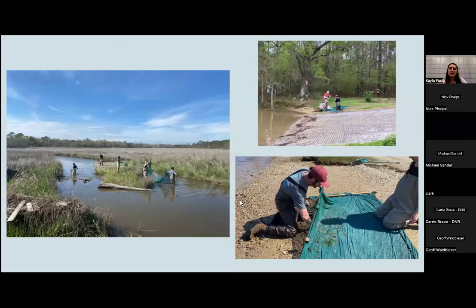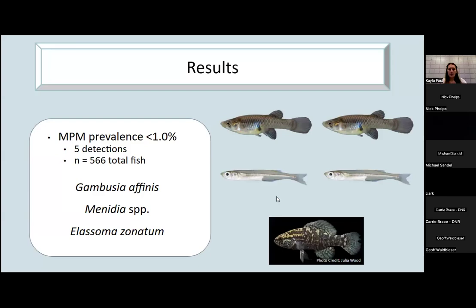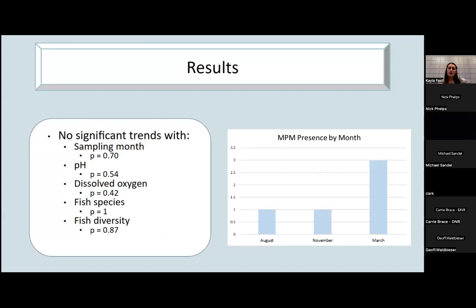Using seine nets, they collected different fishes and took the dermal mucosa to isolate the microbial DNA from the fish. Then using our PCR protocols, they detected if the fish had NPMs or not. What they found was the NPM prevalence was less than 1%, with only five total detections: two being Gambusia affinis, two being Menidia, and one Etheostoma zonatum. While they did not find significant trends with what month was sampled or the pH and dissolved oxygen in the water or what species it was or the fish diversity at the site, they did find an association with NPM and fish community at a site.